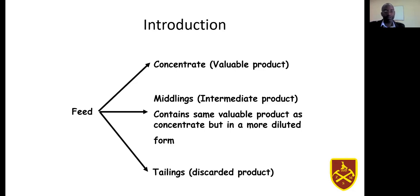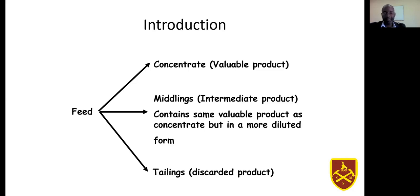The tailings form the effluent which goes to the tailings or slimes dam. We can also form an intermediate product called a middling, which contains a mixture of both the unwanted and partly the wanted minerals. So the objective in mineral processing is to separate the minerals and form the economical or valuable product.